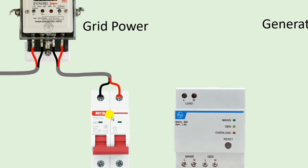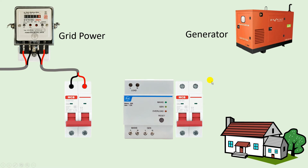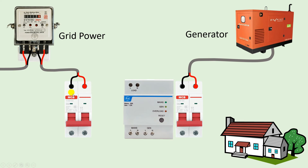From the energy meter, the power supply which goes out has to be connected with the MCB — the same way we connected the grid power supply with the MCB. Similarly, the generator power supply coming in is also to be connected with an MCB. We bring the generator's power supply and connect it with these two terminals directly. You can see here the phase supply and the neutral supply are connected.